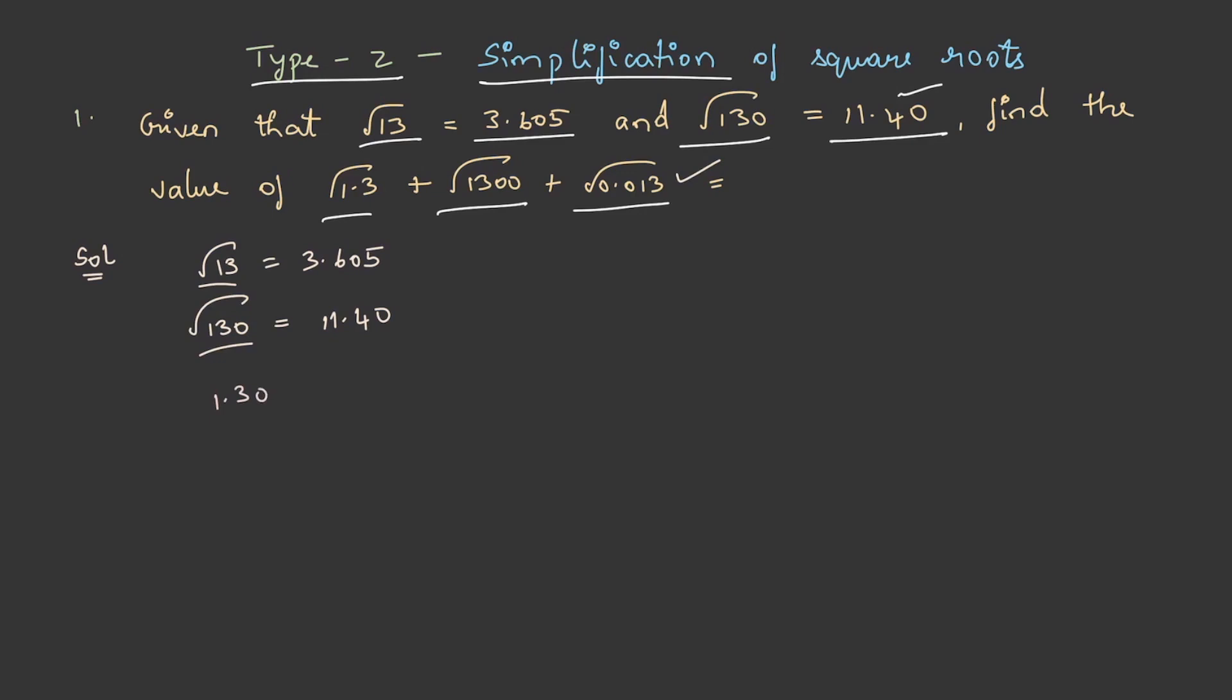1.3 can be written as 130/100. Similarly, 1300 can be written as 13×100, and 0.013 can be written as 130/10000.